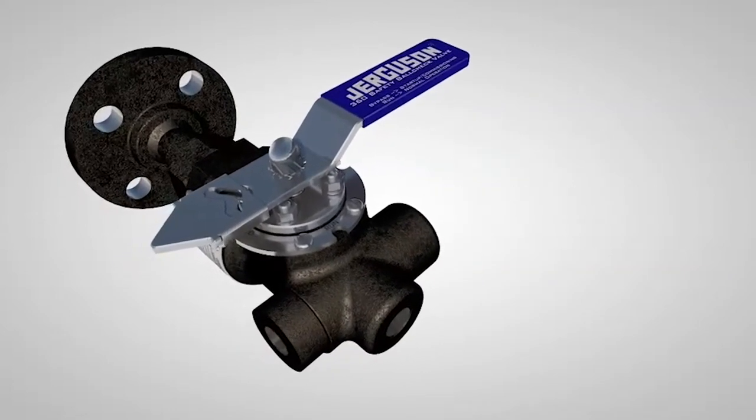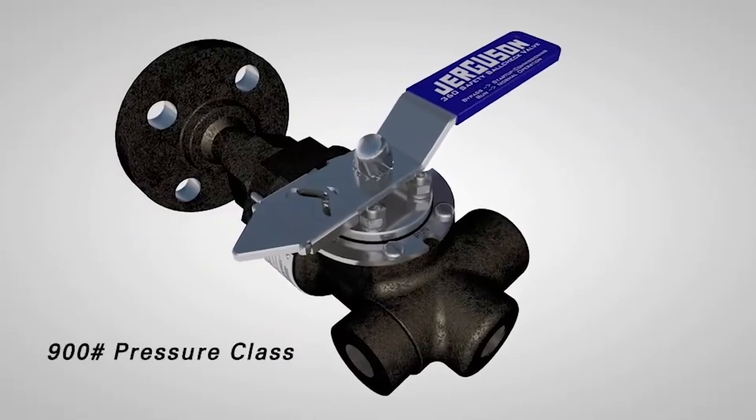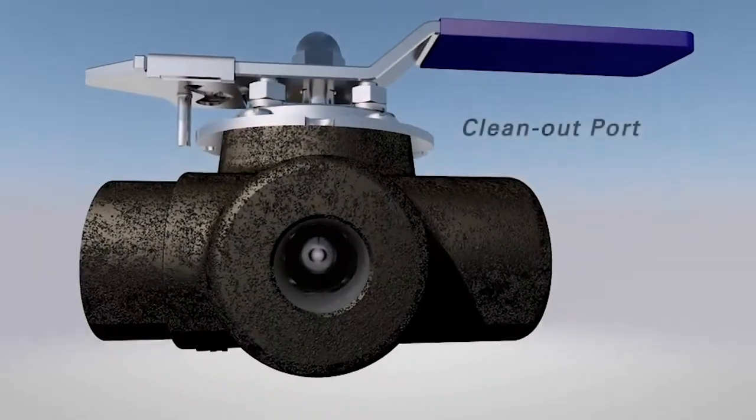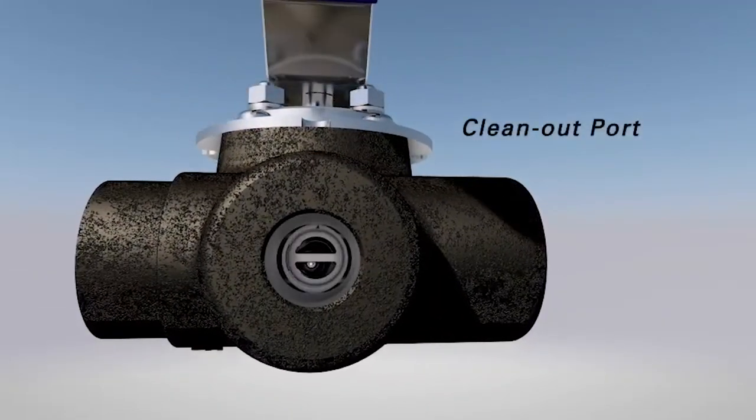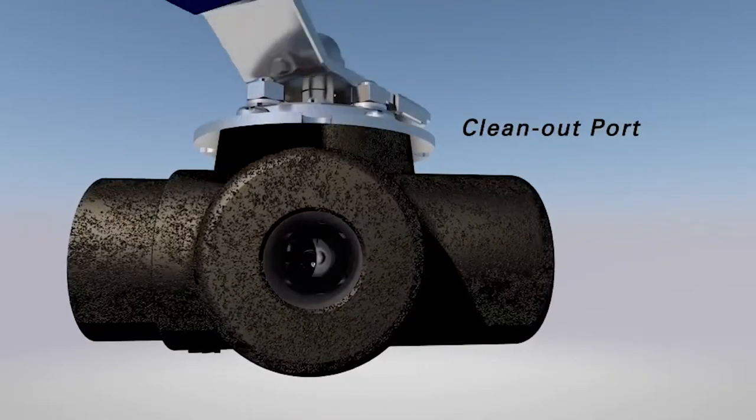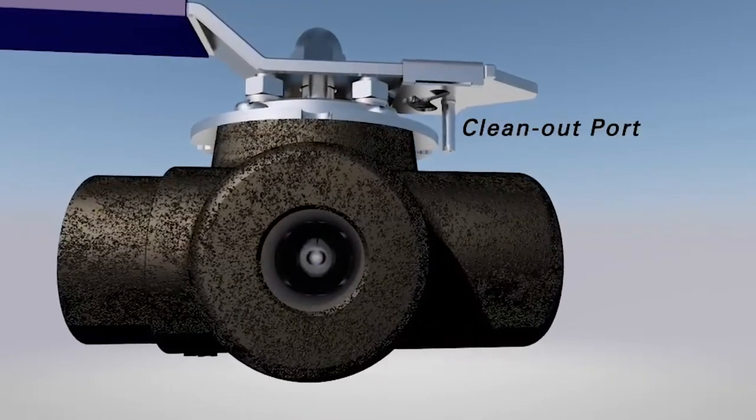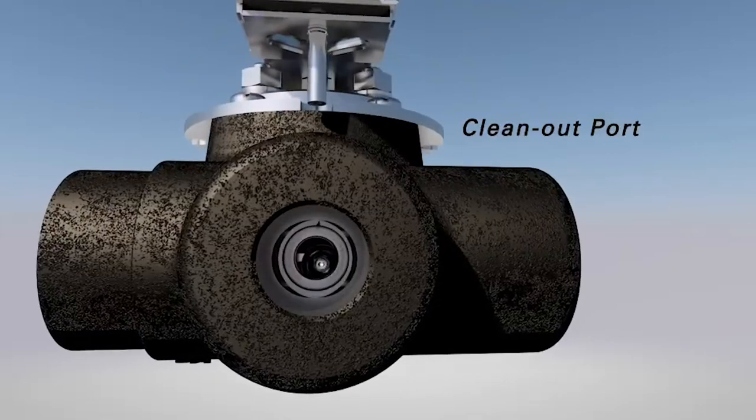The robust body is rated to 900-pound pressure class. A clean-out port opposite the vessel connection allows for quick inspection of the valve internals, or may be used as a flushing point for online maintenance in dirty service.